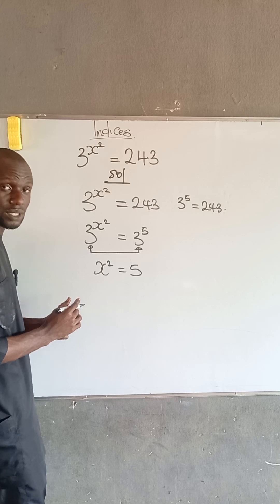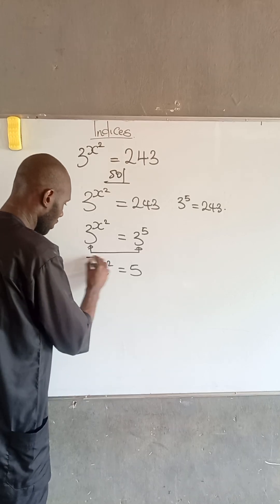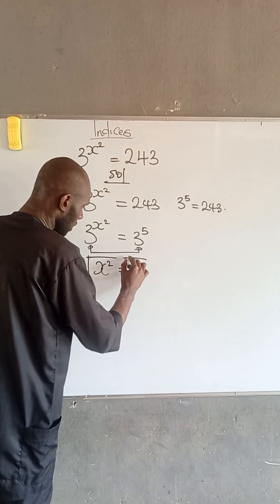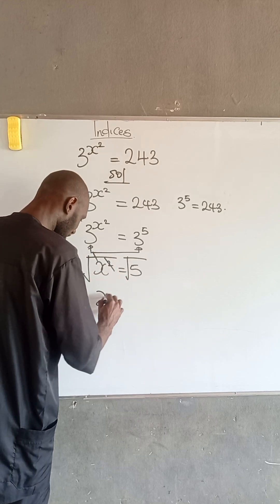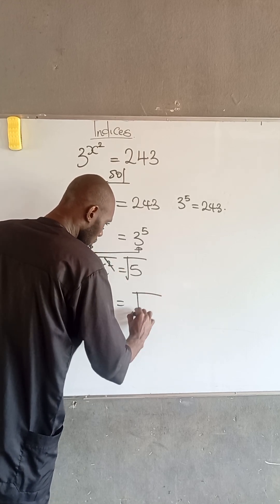Now, to obtain x, we have to take the root of both sides. At this point, root will cancel that square, so we have that x is equal to root of 5.